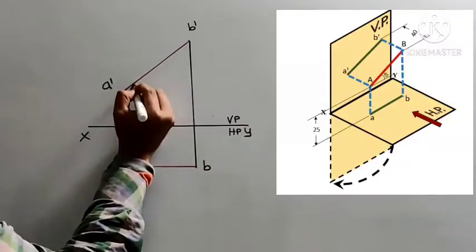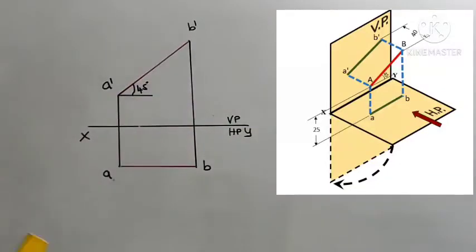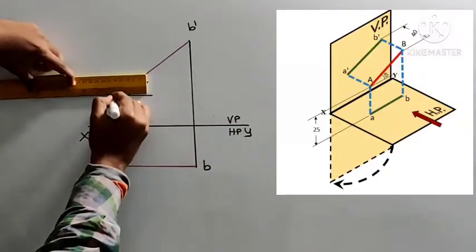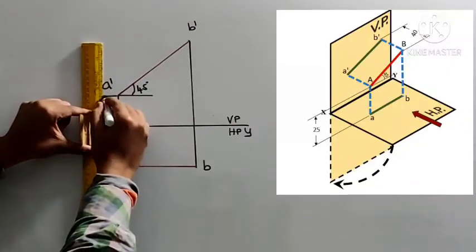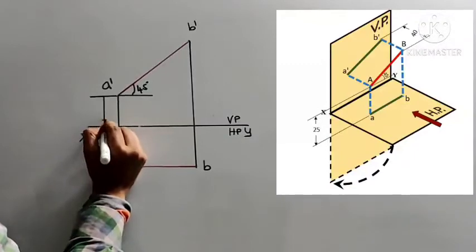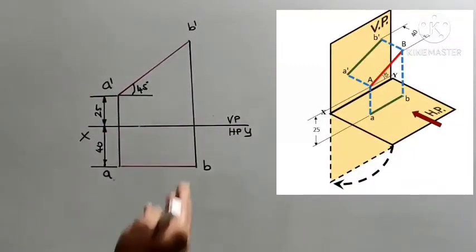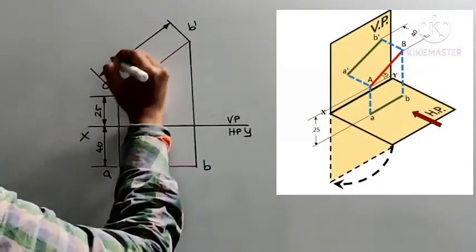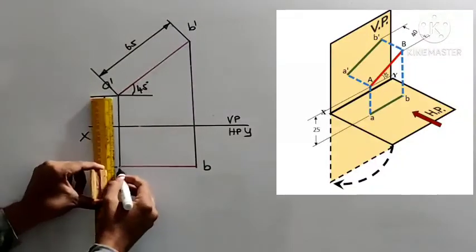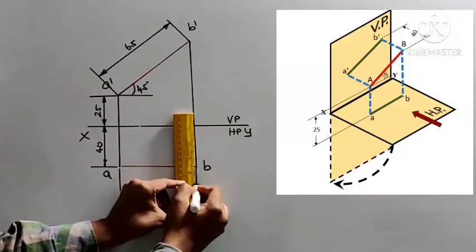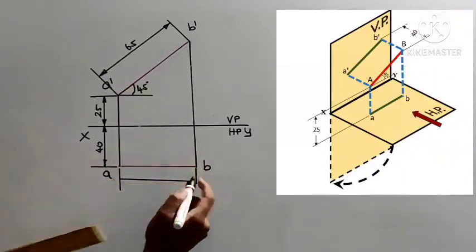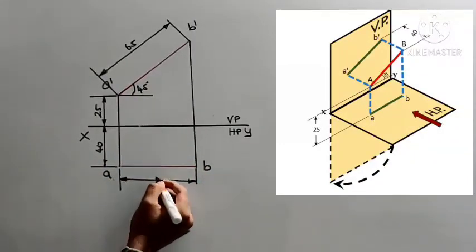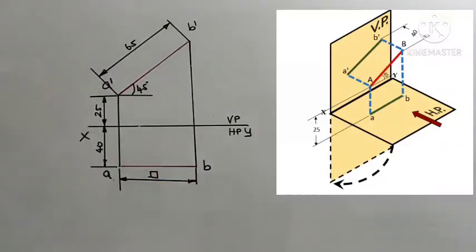Next, you need to dimension it. The line is inclined at 45 degrees, and end A is 25mm above HP and 40mm in front of VP. You need to dimension the true length as given in the question — the true length is visible only in the front view. Also, you need to dimension the projected length in the top view, which is shorter than the true length. Measure and mention it. This is how you draw the projection of a straight line when it is parallel to one plane and inclined to the other plane. Thank you.